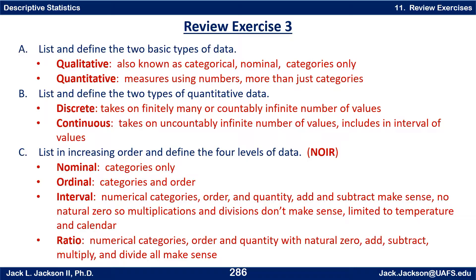The four levels of data spell the word NOIR: N-O-I-R — nominal, ordinal, interval, ratio — in increasing order of what's contained in the data. Nominal data is categories only. Ordinal data has categories and an order within those categories. Interval and ratio data both have numerical categories and order where the numbers make sense. In interval data, there is no natural zero, so it makes sense to add and subtract quantities but not to multiply or divide. Interval data is limited pretty much to temperatures and calendar dates.